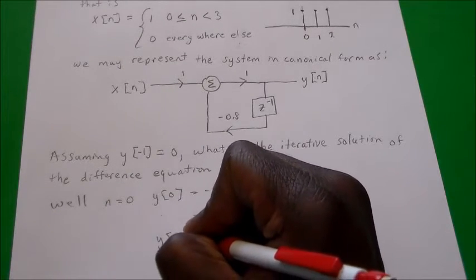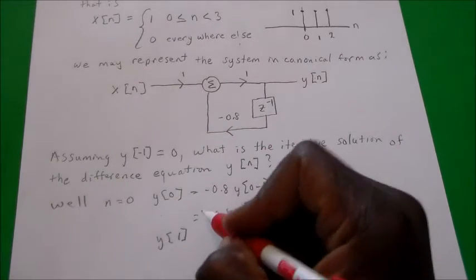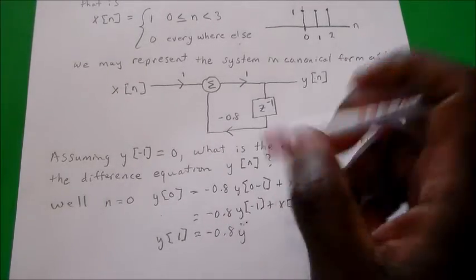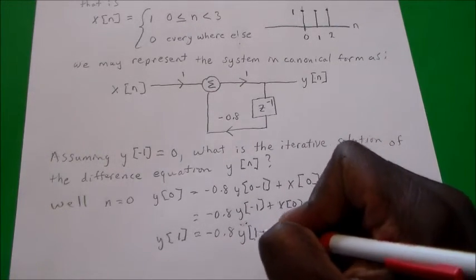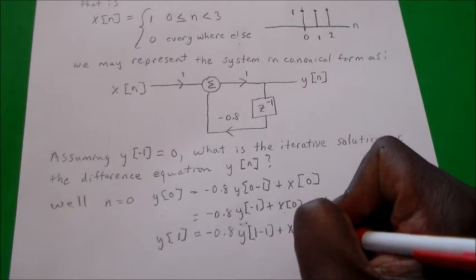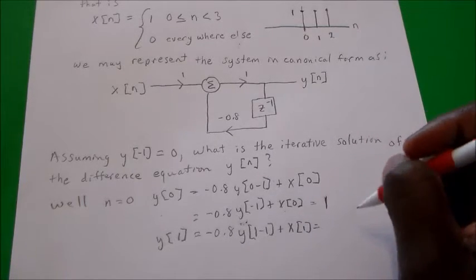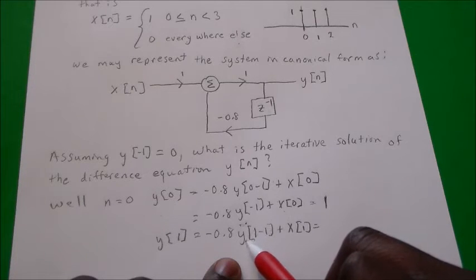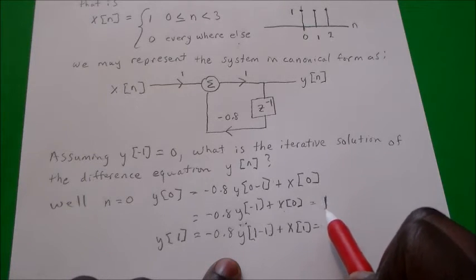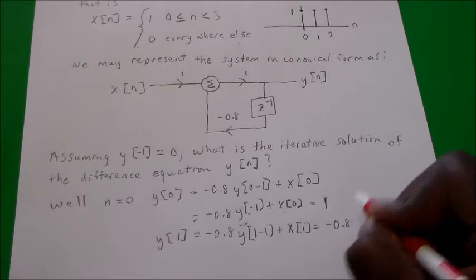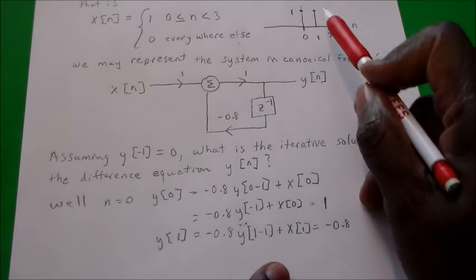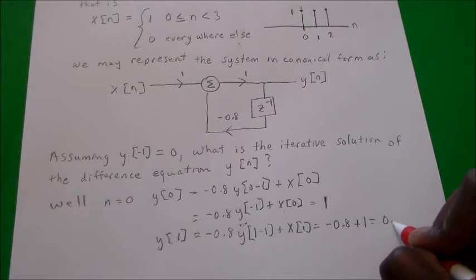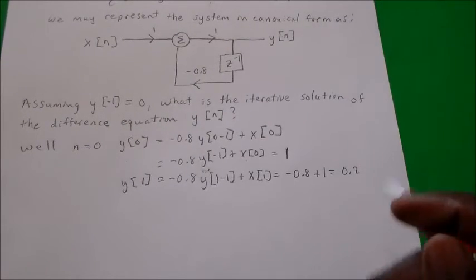When n = 1, we have y(1) = -0.8 times y(1-1) plus x(1). So y(0) = 1, meaning this term is -0.8. And at n=1, x(1) = 1 also. Therefore we have -0.8 plus 1, giving us y(1) = 0.2.